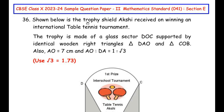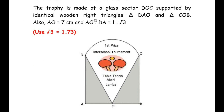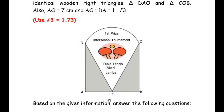Shown below is the trophy shield Akshi received on winning an international table tennis tournament. The trophy is made of a glass sector DOC supported by identical wooden right triangles, i.e., triangle DAO and triangle COB. The side AO is given as 7 cm and the ratio of the sides AO to DA is given as 1 to square root of 3. Based on the given information, answer the following questions.